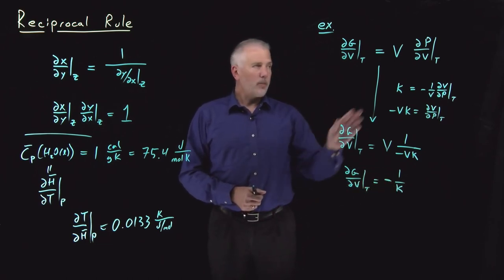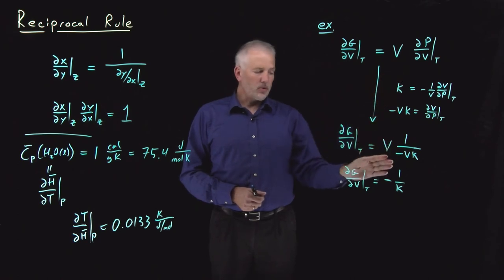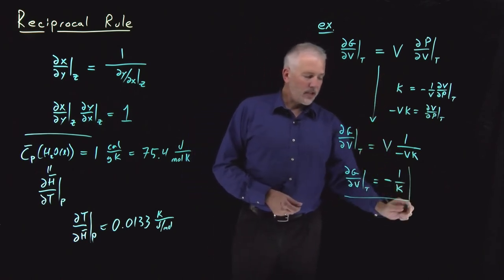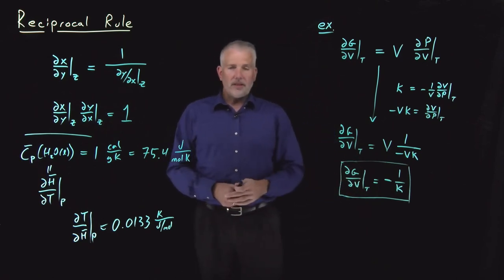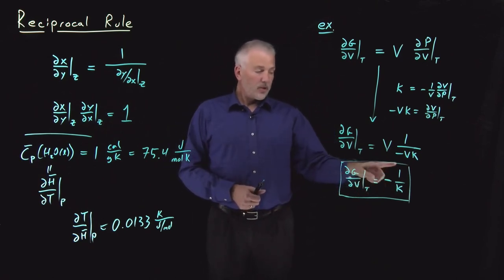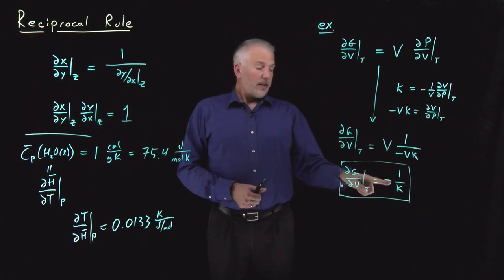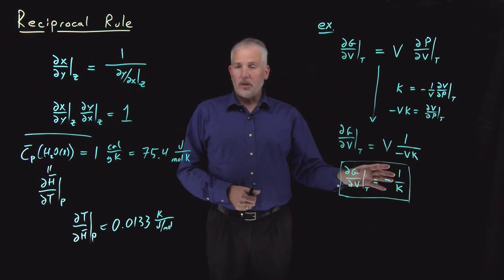Now, with the combination of the chain rule and the reciprocal rule, we've managed to derive something that's actually fairly useful. If we do want to know dg dv at constant t, that's going to be minus 1 over kappa, and kappa, the isothermal compressibility, is something that we can look up.